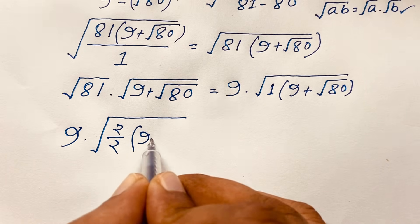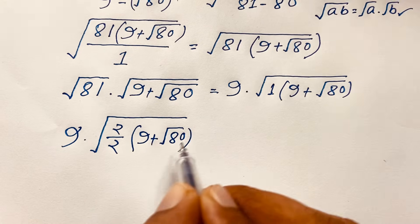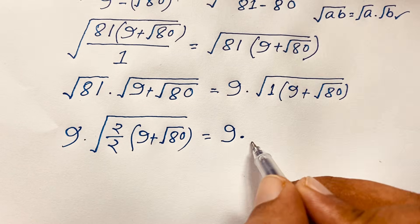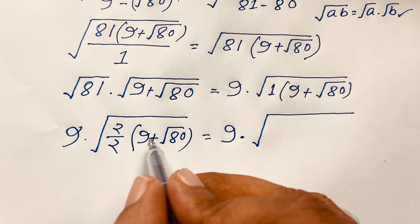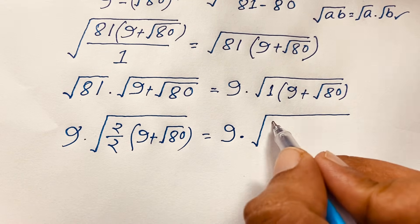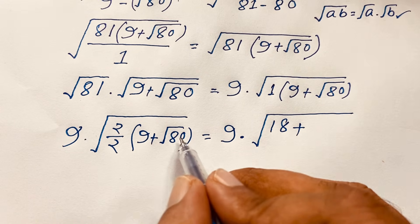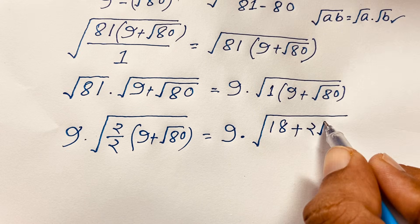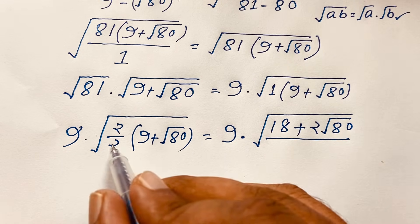Now expanding, 9 plus square root 80 gives us 2 times 9, which is 18, plus 2 times square root 80, which is 2 square root 80, all over 2.